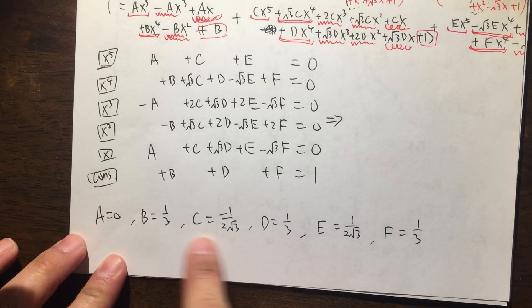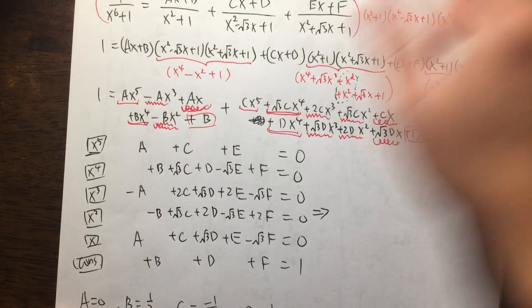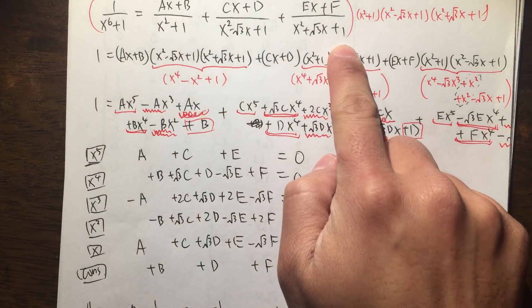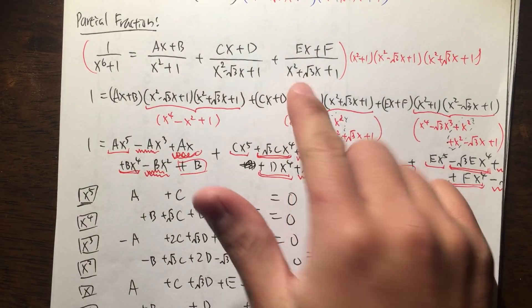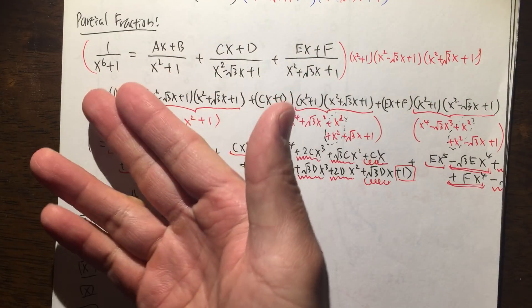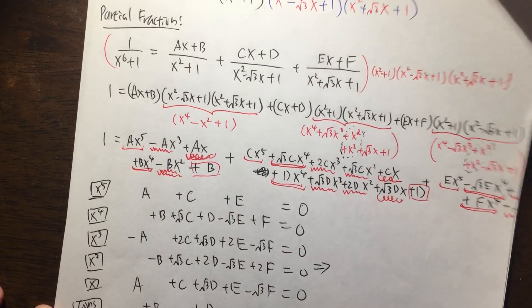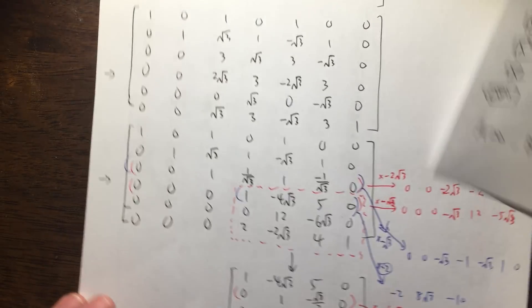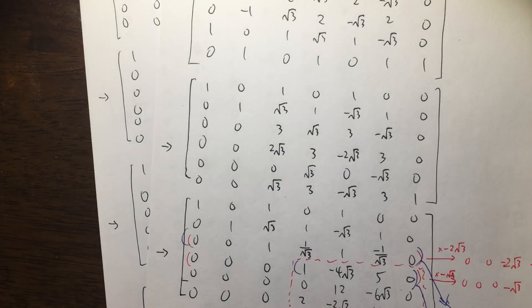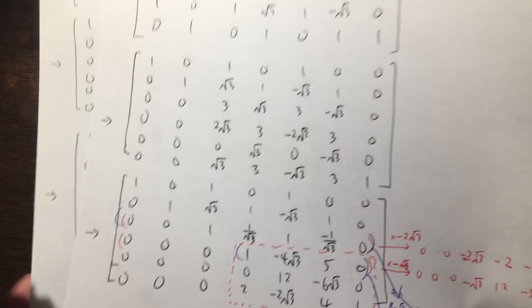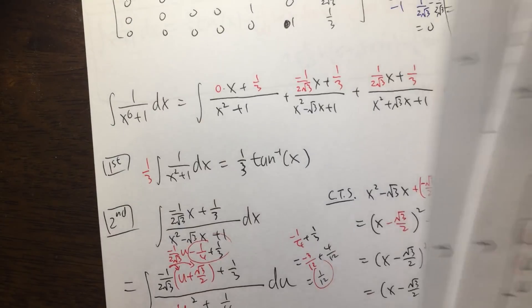Well, you can just plug in all these values into our general setup right here. So this is how we are going to integrate 1 over x to the 6th power plus 1. You have this a, b, c, d, e, f values, and what we are going to do is, as you guys saw this from the first part, this right here are the matrices, the Gaussian elimination.